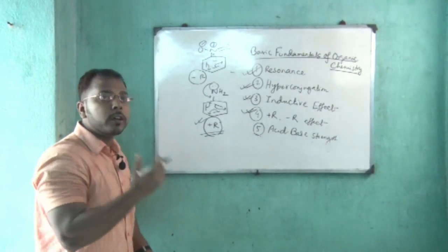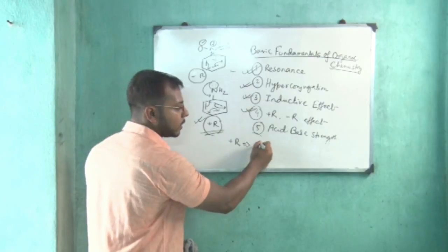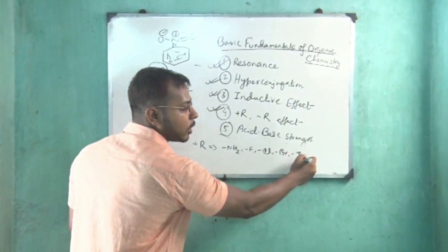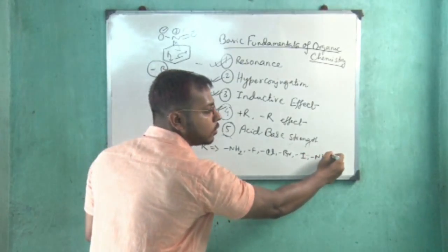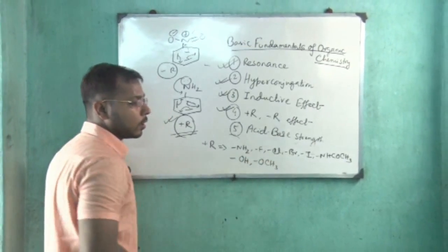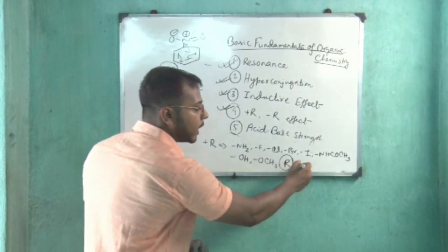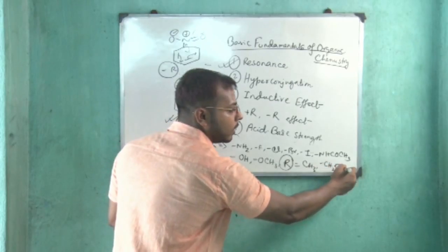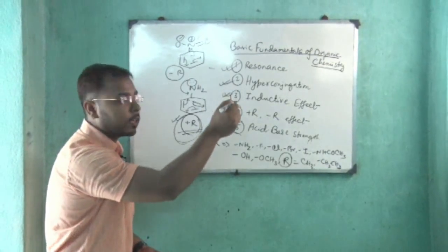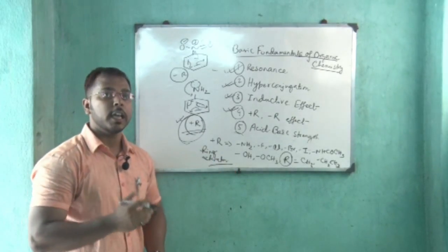Which groups have plus R effect? Plus R effect groups, when attached to a benzene ring, include: NH2, any halogen (because all halogens have lone pairs), NHCOCH3, OH, OCH3, and all alkyl groups such as methyl, ethyl, propyl — all of them have the ability to increase the electron-donating power of the benzene ring. So they are known as ring activators towards electrophilic substitution.